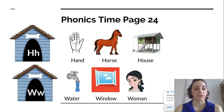Next we have the letter W. W says W, W, W. So first we have water, water, window, window, woman, woman.